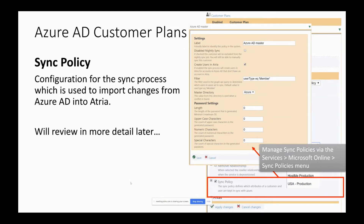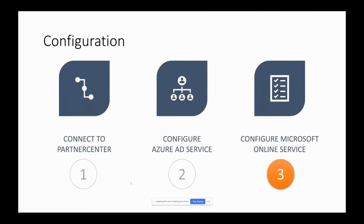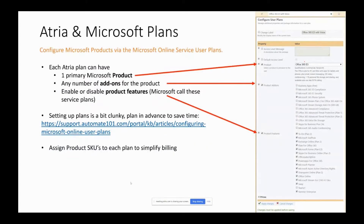Now onto the Microsoft Online service — the second part. This is where we configure the Microsoft products we want to provision to customers and their users. Each plan can have one Microsoft primary product, such as Office 365 E3. It can have any number of add-ons selected, and when you change the product the add-ons will change in the list as well. You can enable or disable product features. By default all features will be enabled, but you can turn them off within the plan if needed.